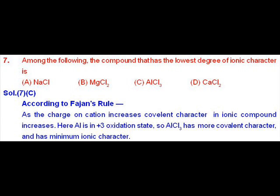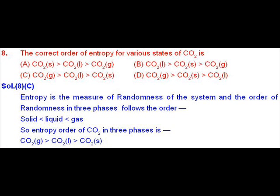Question number 7. According to Fajan's rule, as the charge on cation increases, covalent character in ionic compound also increases. Here, Al is in plus 3 oxidation state, which is maximum in the given. So there is maximum covalent character in AlCl3. That's why this is least ionic.